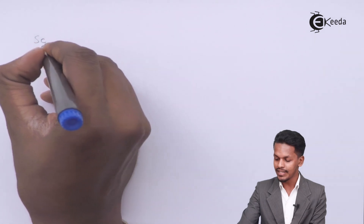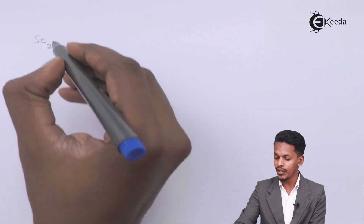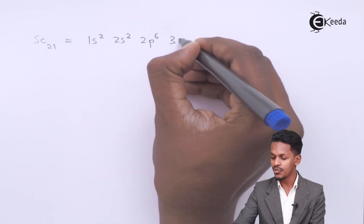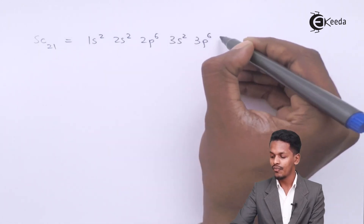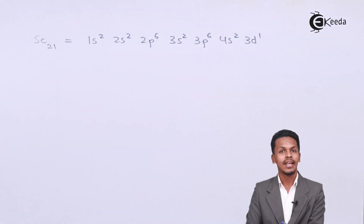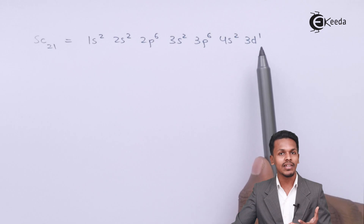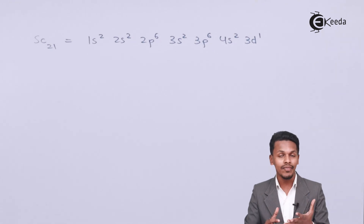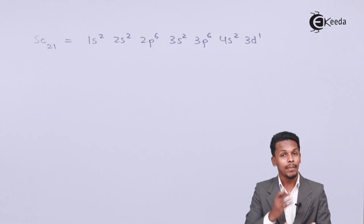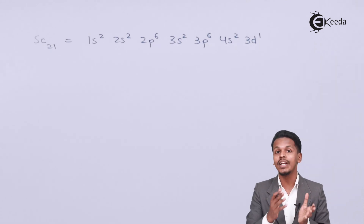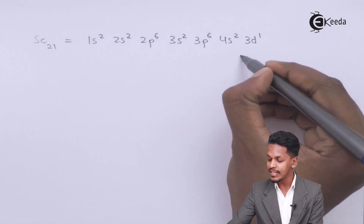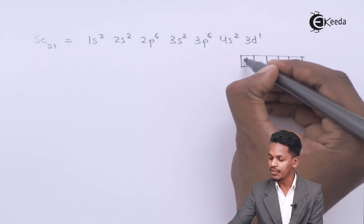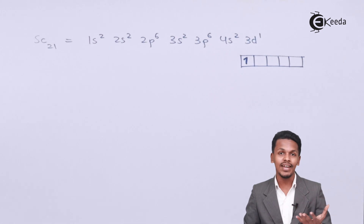Let's compare electronic configurations. Scandium has atomic number 21, so its electronic configuration is: 1s2 2s2 2p6 3s2 3p6 4s2 3d1. The d orbital here consists of only one electron. Since the d sub-shell has five orbitals, it should ideally have either partially filled electrons or all 10 electrons to be completely filled.